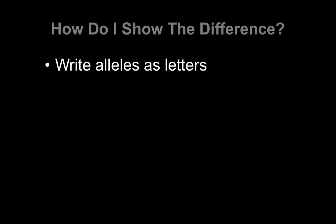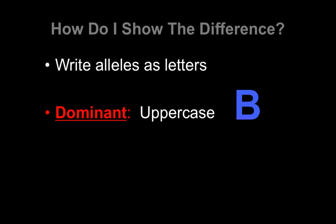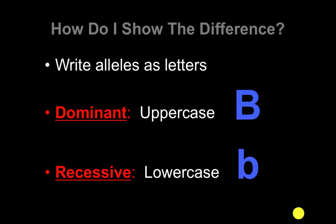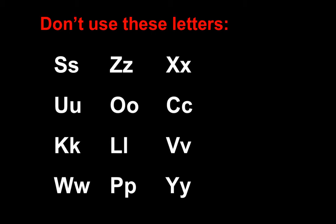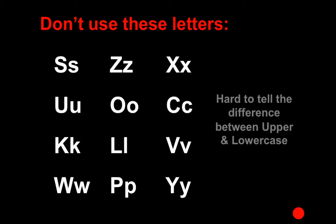We're going to write alleles as letters. A dominant allele gets an uppercase letter, and a recessive allele gets a lowercase letter. It doesn't really matter which letter you use — I recommend sticking with B. Just make sure uppercase is dominant and lowercase is recessive. Avoid letters where it's hard to tell the difference between upper and lowercase, because when you get sloppy you lose track of which are big and which are little. Stick with B.